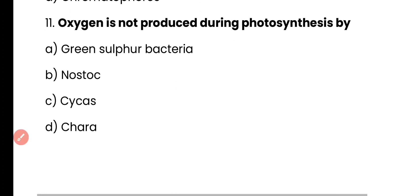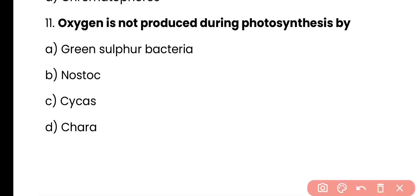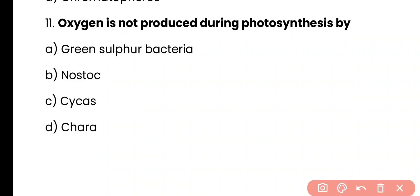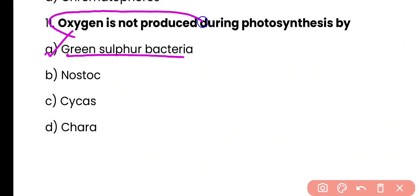Question number 11. Oxygen is not produced during photosynthesis by: green sulfur bacteria, Cycas, or Chara? Correct answer is option A. Green sulfur bacteria carry out anoxygenic photosynthesis in which oxygen is not produced.